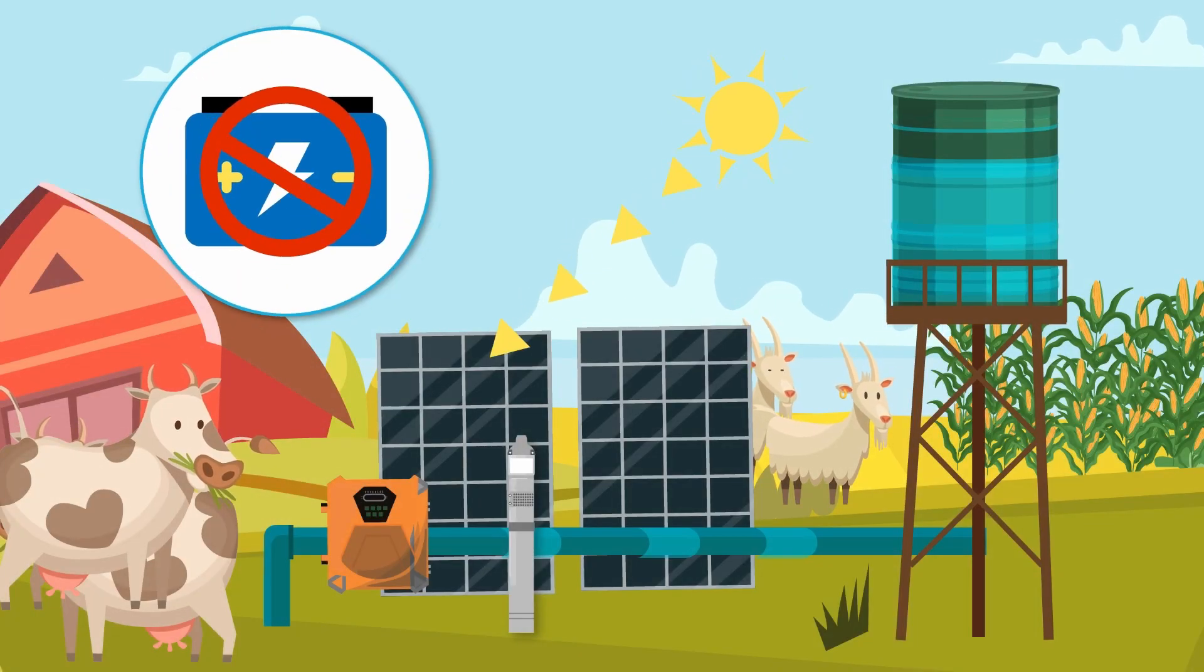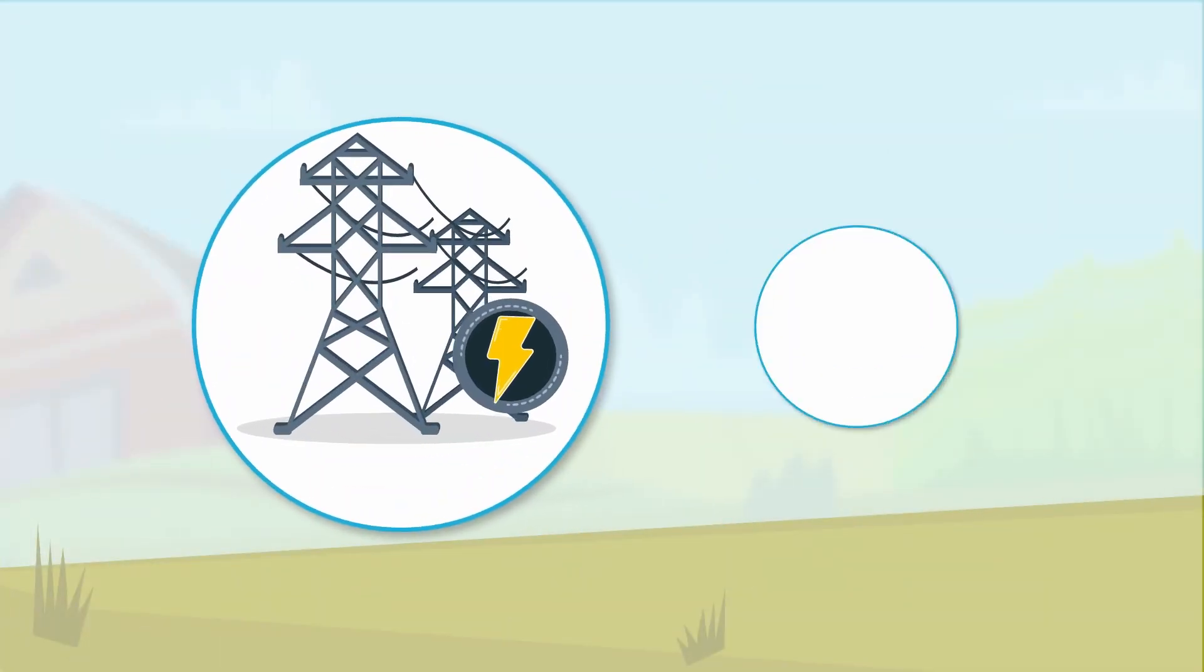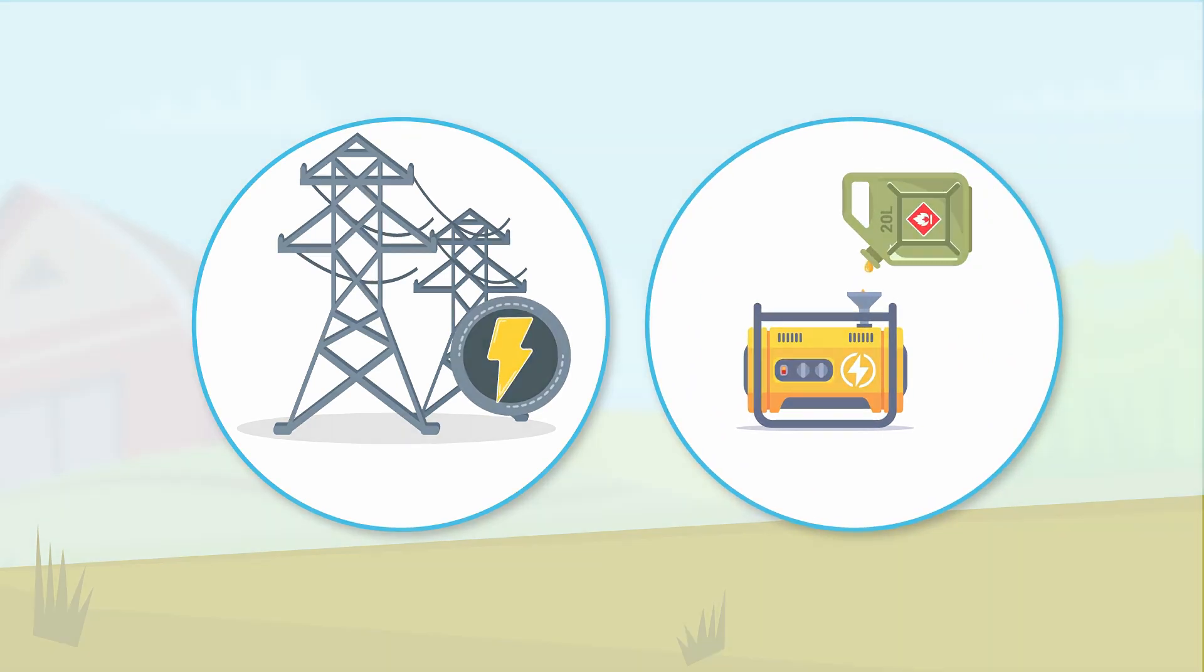Forget the need for batteries. Our solar pump kicks into action as the sun rises, ensuring your water tanks remain consistently full until sunset. No more waiting for power to return after load shedding or excessive spending on generator fuel.